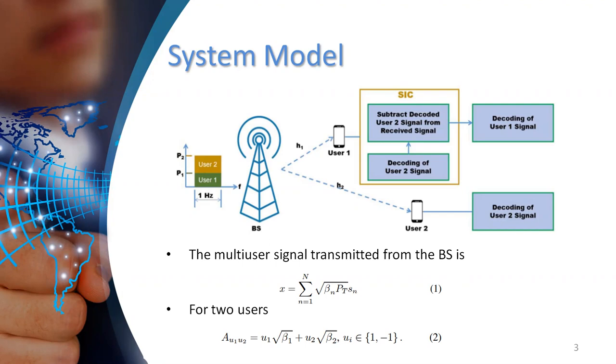the base station superimposes the signals of these users as shown in equation one, and it's shown in equation two for a special case when two users are deployed.